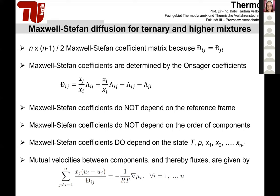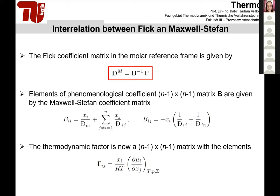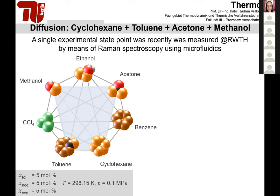The expression for mutual velocities in an n-component mixture is given by a sum, with mole fraction gradients as driving forces on the right-hand side. The relation between Fick and Maxwell-Stefan in the multi-component case is similar to the binary case: it involves a matrix product, where the Fick diffusion coefficient matrix equals the thermodynamic factor matrix times the B-inverse matrix, which is determined by the Maxwell-Stefan diffusion coefficients.